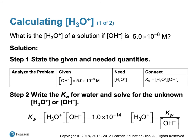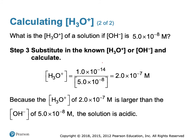Let's do an actual problem. What is the hydronium concentration of a solution if the hydroxide concentration is 5 × 10⁻⁸ molar? We know KW = 1 × 10⁻¹⁴. Solving for hydronium: 1 × 10⁻¹⁴ divided by 5 × 10⁻⁸ gives a hydronium concentration of 2 × 10⁻⁷ molar. This concentration is larger than the hydroxide concentration, so the solution is acidic.